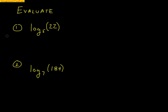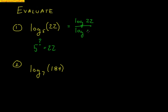Now let's work on evaluating problems using change of base. For example, log base 5 of 22 — meaning 5 raised to what value equals 22? To solve this quickly on the calculator, I'll use the log base 10 button: log 22 over log 5. Typing that in, I get 1.9206. I always like to check by doing 5 raised to 1.9206 to confirm I get something very close to 22, and I do.